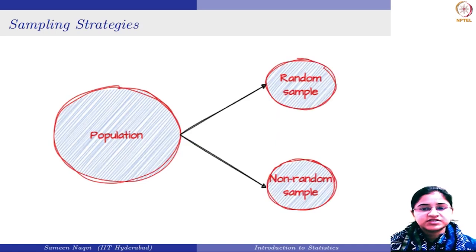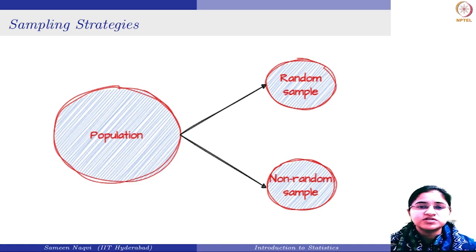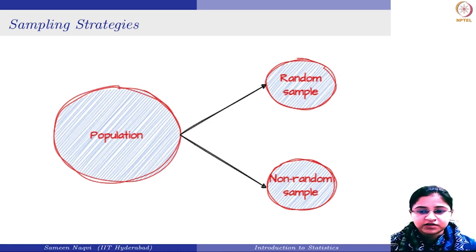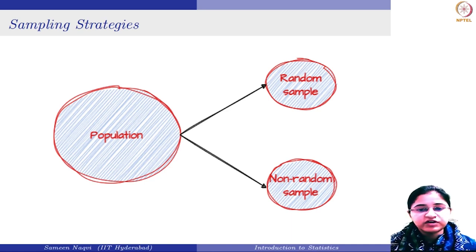Based upon the sample taken, it can be further divided into whether it is a random sample or a non-random sample. A random sample means that each and every observation in the population has an equal chance of getting selected. If it is done in a non-random or biased way, then we refer to it as a non-random sample. Based upon these two ways, you can have different sampling techniques.